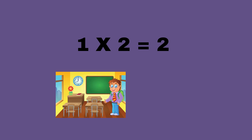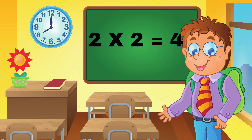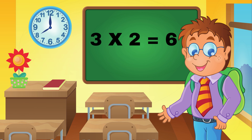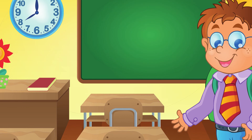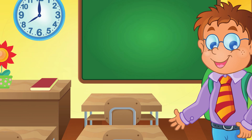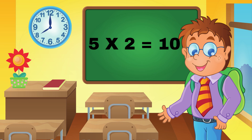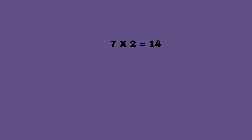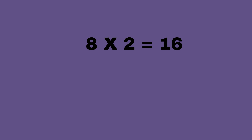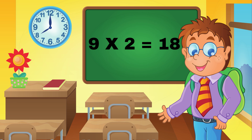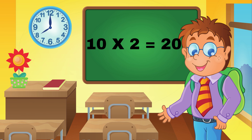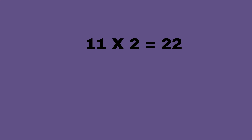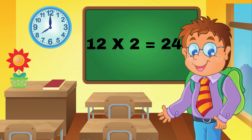1 times 2 equals 2. 2 times 2 equals 4. 3 times 2 equals 6. 4 times 2 equals 8. 5 times 2 equals 10. 6 times 2 equals 12. 7 times 2 equals 14. 8 times 2 equals 16. 9 times 2 equals 18. 10 times 2 equals 20. 11 times 2 equals 22. 12 times 2 equals 24.